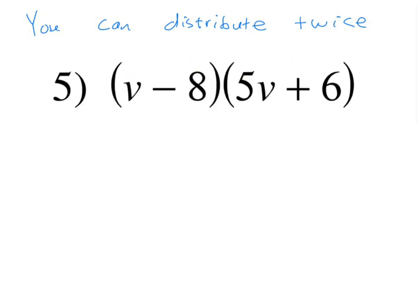So I'm going to use one color for my first term as I distribute, and then use a different one for my next one. So I've got v times 5v. Well, the v's are going to multiply together to make v squared. So this is going to be 5v squared.